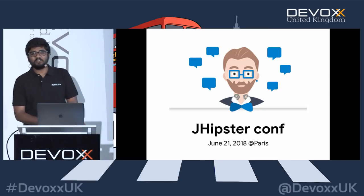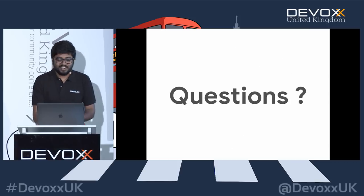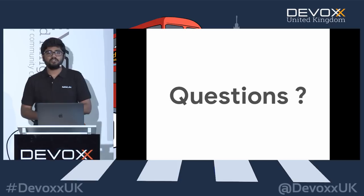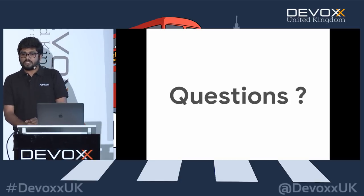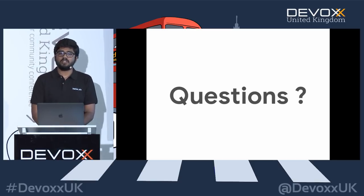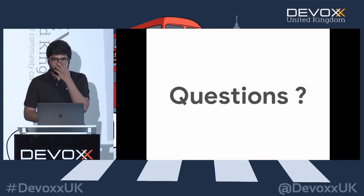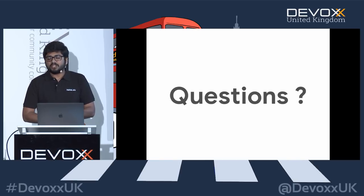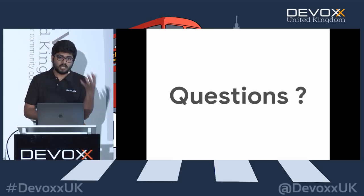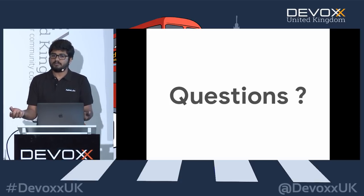One quick announcement: we have a JHipster Conference coming on June 21st in Paris — you'll see lots of Java rockstars there. Q&A: Do you consider using Vue.js? We have modules that support Vue.js, and if it gains more traction we're trying to add it to the default generator. Right now you can use modules to generate a Vue.js-based frontend. When adding a new microservice, I generate a JHipster microservice application and the gateway remains — I just add the new microservice to it.